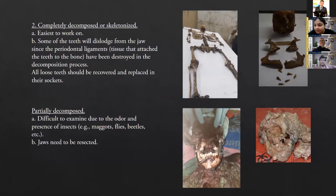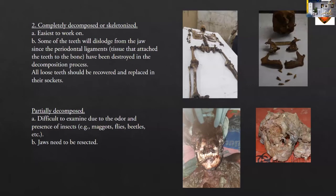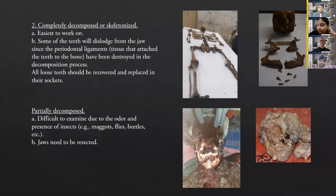Skeletonized remains are the easiest to work with — they are not messy or smelly. However, in skeletal remains, because the periodontal ligament (PDL) has been destroyed, single-rooted teeth very often come out from their sockets. These loose teeth should be recovered and replaced in their sockets, especially if radiography is to be done. Partially decomposed remains are the most difficult to examine because of odor, presence of flies and maggots. In such cases, if possible, it is preferable to resect the jaws — as these are not viewable remains and relatives will not view them. This is acceptable in cases of advanced decomposition.